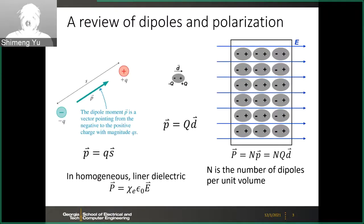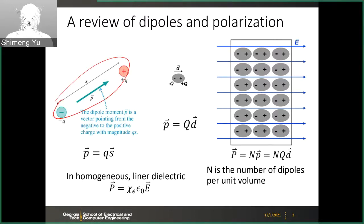First, let's review some basic physics from your college physics or from the chapter on EM theory of dielectrics. The basic concept of the dipole: a dipole is a pair of positive charge and negative charge. This dipole introduces a polarization — you can think of it as having a pair with positive charge and negative charge separated by a certain distance, which introduces this polarization.